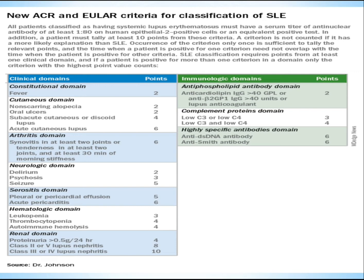There is a clinical domain and an immunological domain. Under the clinical domain there are seven subdomains. Constitutional domain: fever carries 2 points. Cutaneous domain: non-scarring alopecia 2 points, oral ulcers 2 points, subacute cutaneous or discoid lupus 4 points, acute cutaneous lupus 6 points. Arthritis domain: synovitis in at least 2 joints, or tenderness in at least 2 joints with at least 30 minutes of morning stiffness, carries 6 points.